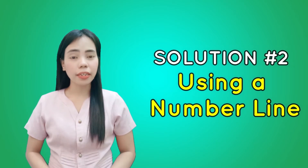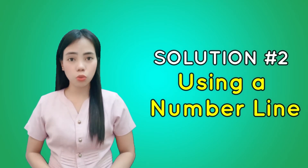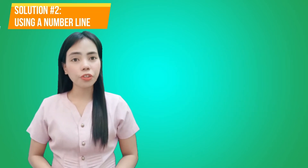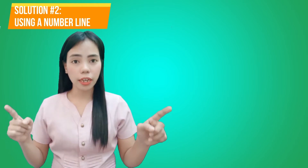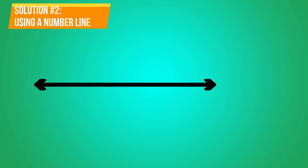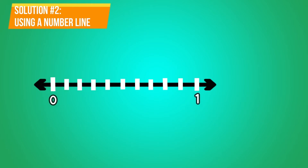A number line is a visual way to see how numbers relate to each other. In order to make a number line, start by drawing a straight line with arrows on both ends. On the left end, put a tick mark and label it with 0. On the right end, label it with 1. From 0 to 1, divide the segment into 10 equal parts. Take note, 1 is included.